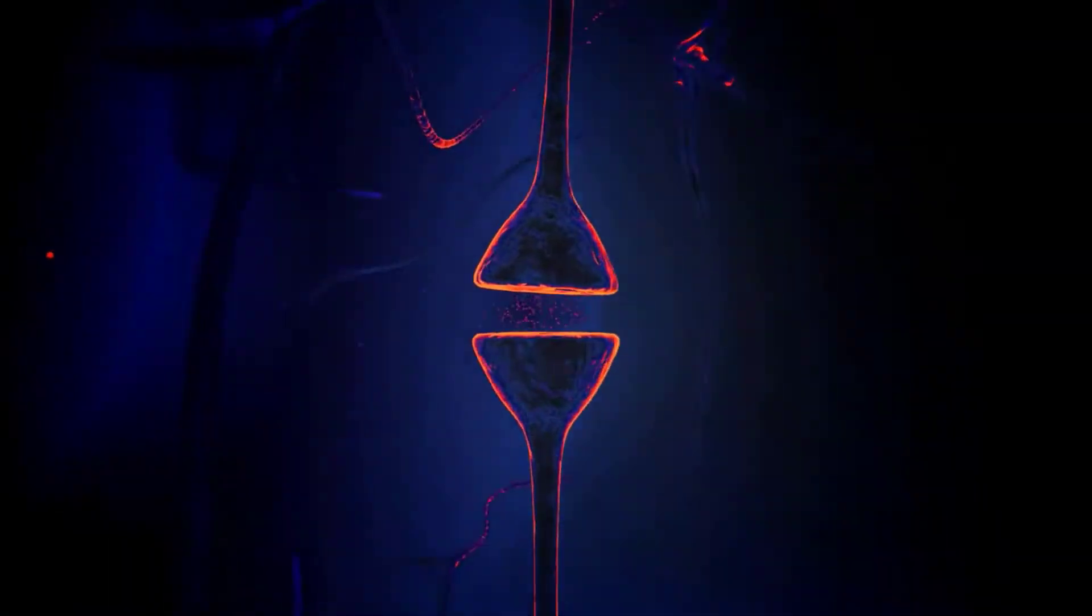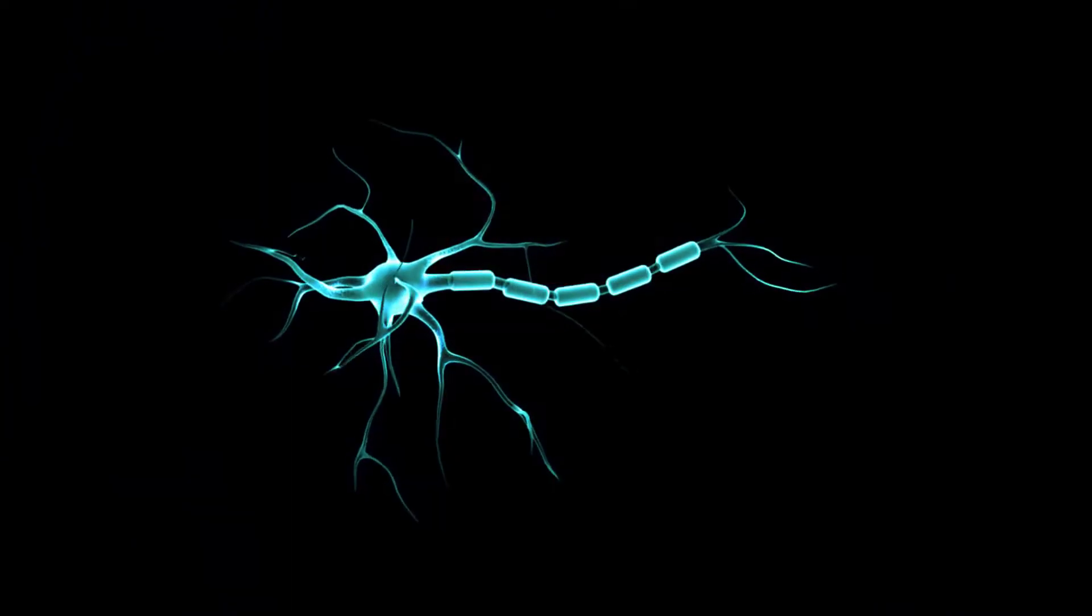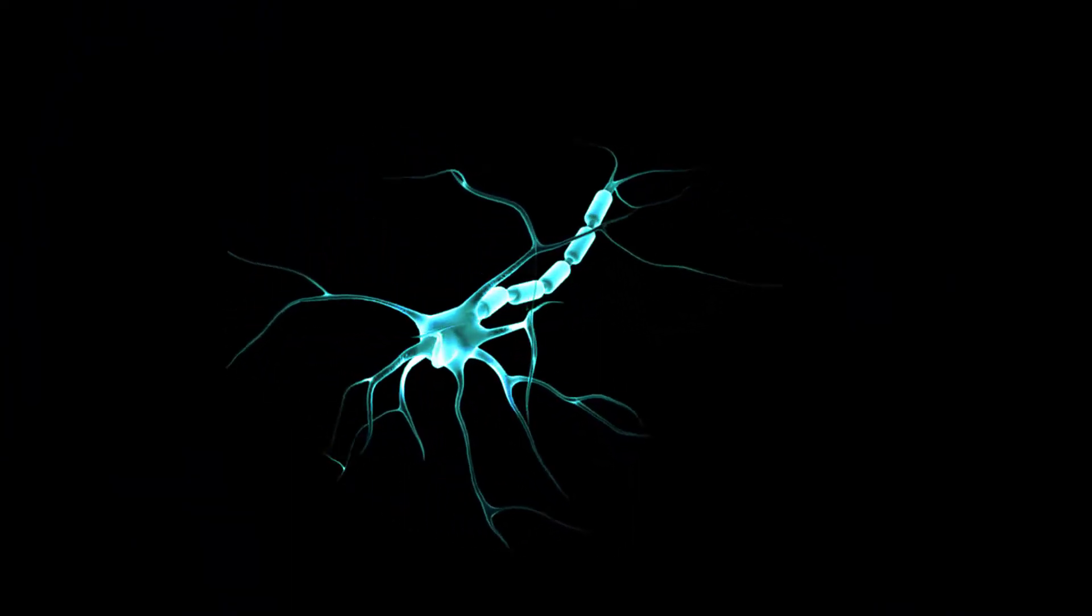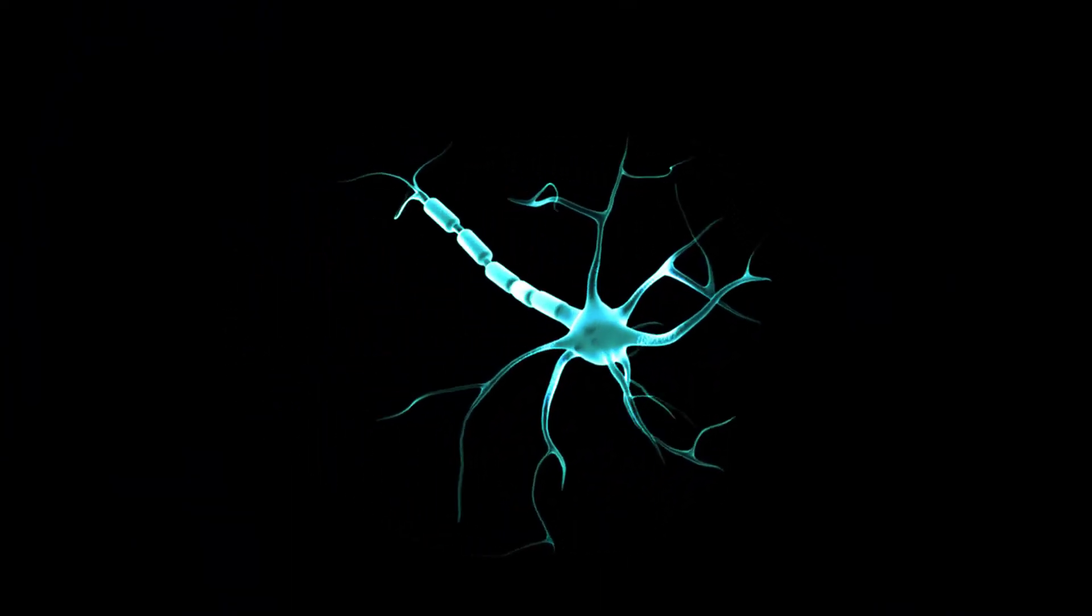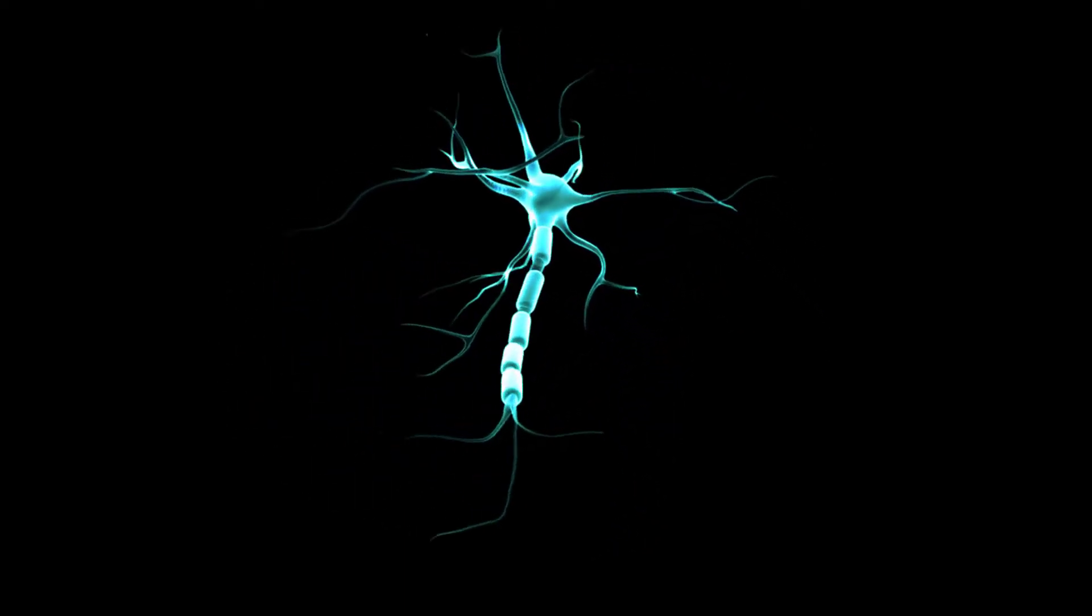Tonic receptors are sensory neurons that are always active. Phasic receptors are normally inactive, but they become active for a short time whenever there is a change in conditions that they are monitoring.